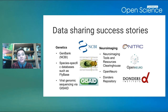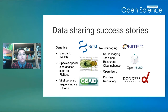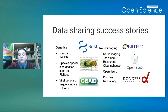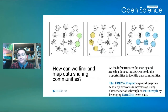Another example is neuroimaging, which is a little less developed than the genetics world but is really growing. Things like OpenNeuro, which used to be OpenFMRI, is a great example of where there's increasing work to share data through a scientific community.